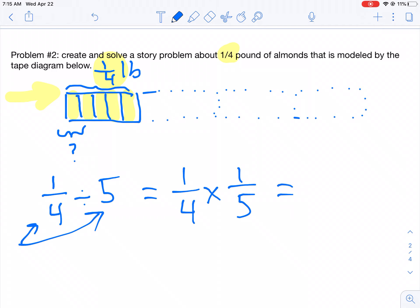We get one over twenty. Remember you multiply straight across on the numerator, right here, straight across on the denominator. One-twentieth of a pound. So each snack bag is one-twentieth of a pound.